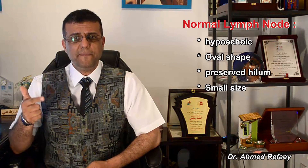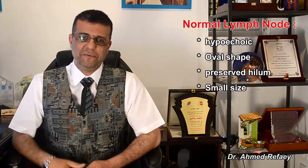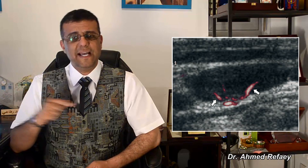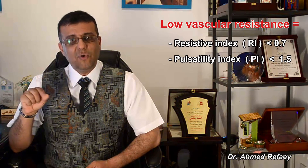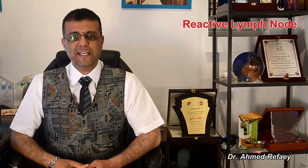Starting with the normal lymph node in the neck: on gray scale ultrasound, the normal lymph node is hypoechoic, oval shaped, with preserved hilum and small size with short axis less than nine millimeters, as you see in this image. On color Doppler study, it shows hilar vascularity or may appear avascular, as you see in this image.